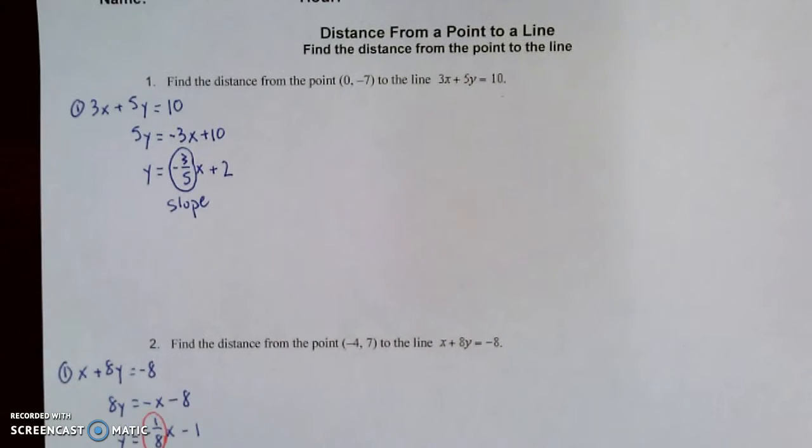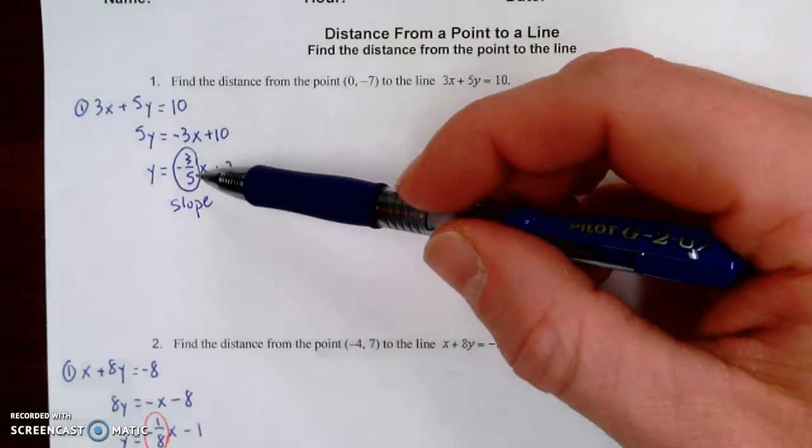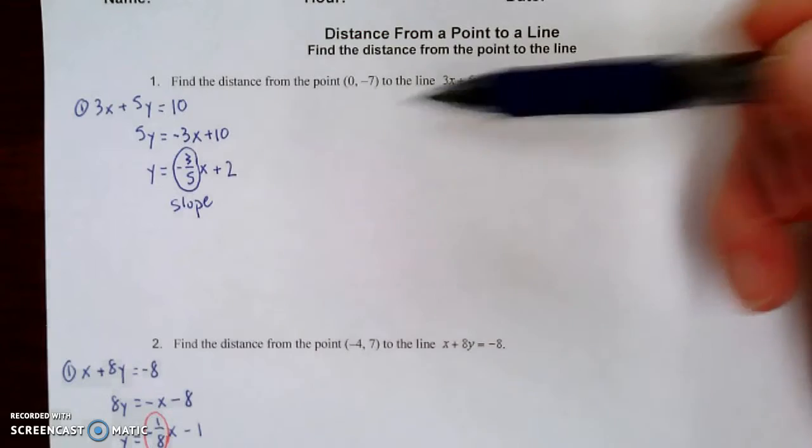All righty, we're back to finding the distance from a point to a line. Now, we've already done step one, which was to take our line equation and rewrite it in slope-intercept form so that we could get the slope. In this video, we're going to do steps two and three together.